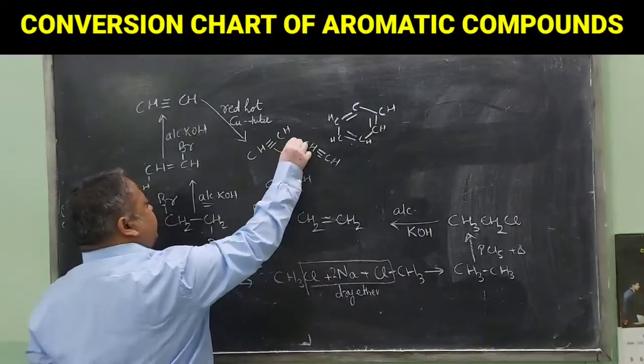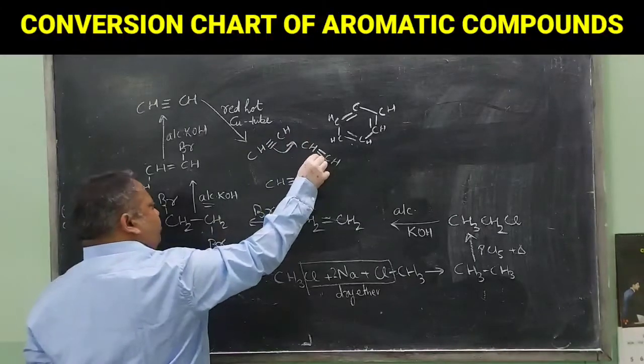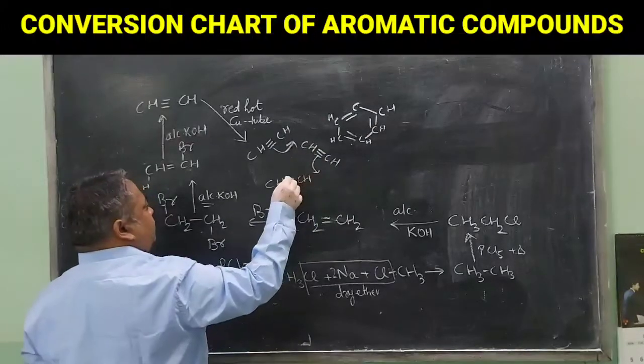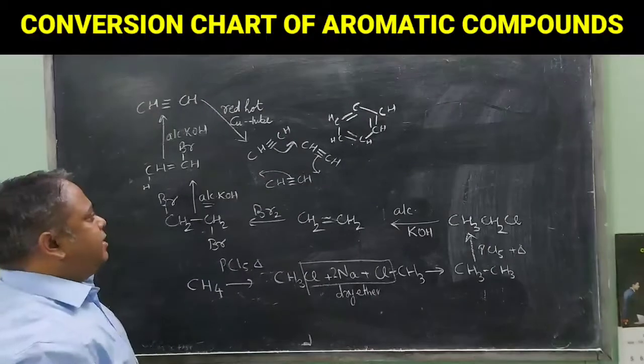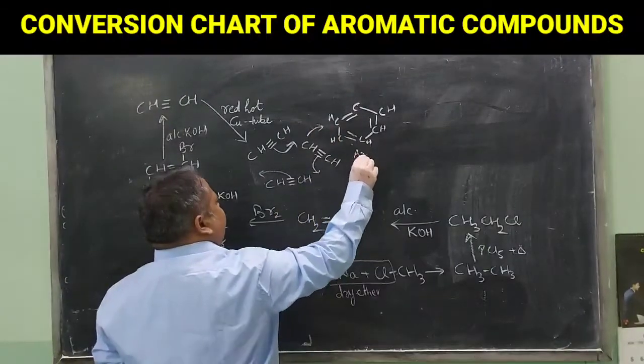One carbon here. These are three times. Now cyclization takes place like this: this bond goes here and joins with this carbon, this bond moves and forms this bond, and this forms this bond. As a result, it forms an aromatic compound.